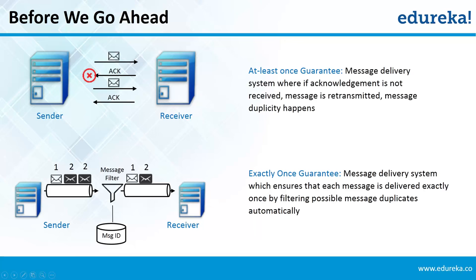There can be a situation where the sender sends a message and it is received by the receiver. However, the receiver did not acknowledge back to the sender. In this case, the sender thinks that the receiver did not receive the message and sends it again. The sender will keep sending the message until it receives an acknowledgement, ensuring the receiver gets the message at least one time.